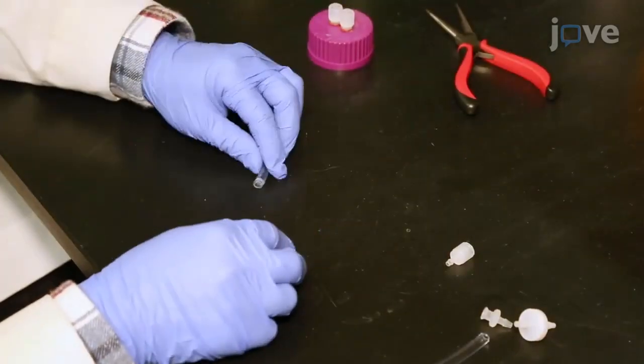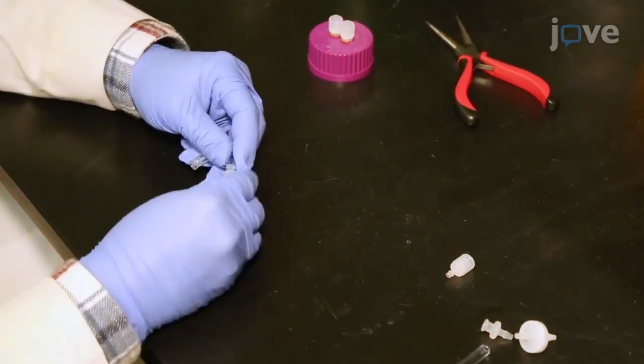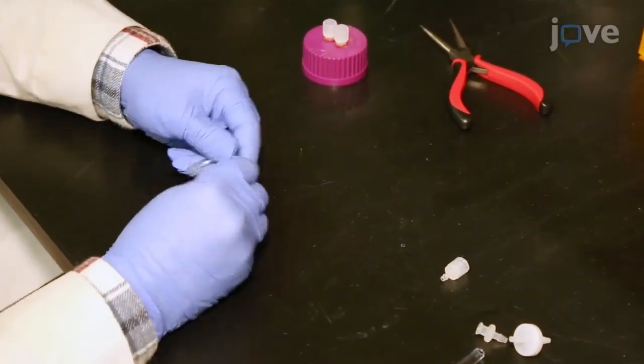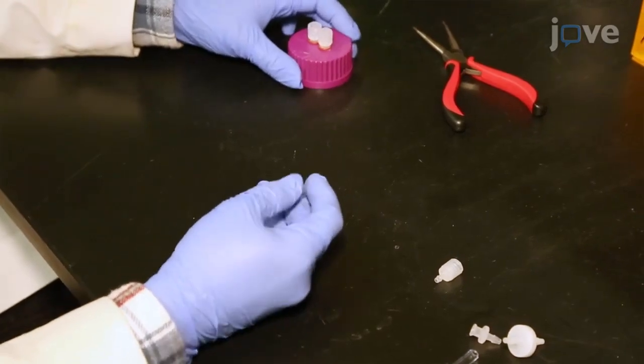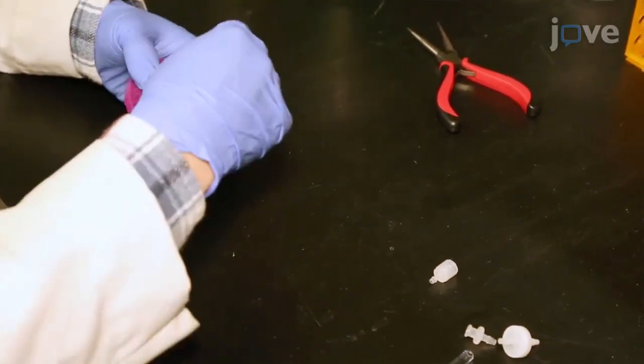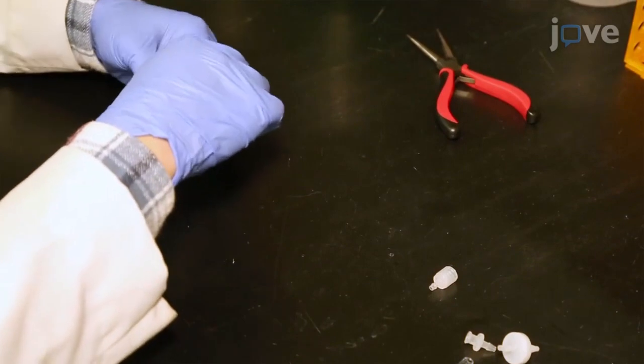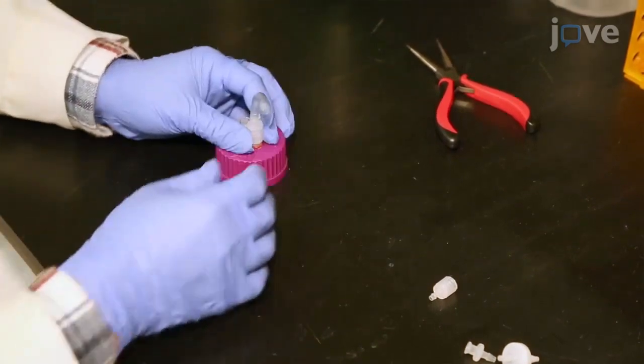For lids that will be used on the bubble column and bottle reactors, attach 1.8-inch female lure to barb fittings to 1.5-inch pieces of 1.8-inch ID PVC tubing. Attach these to each of the exposed male lure fittings on the lid.